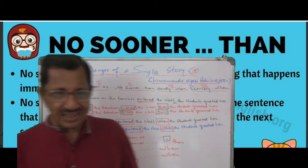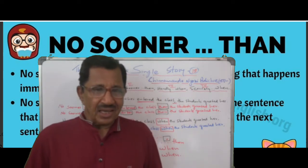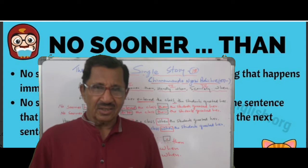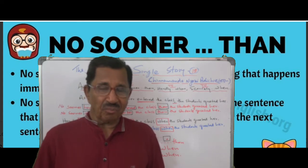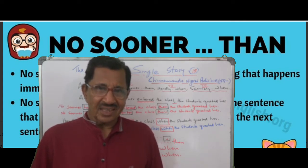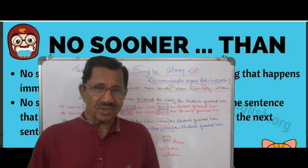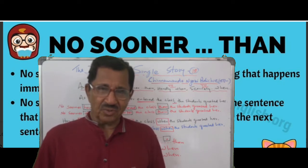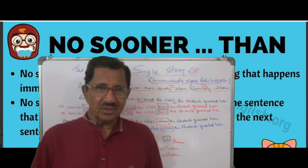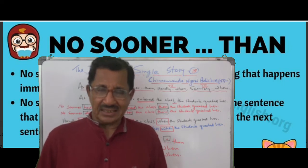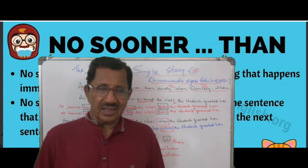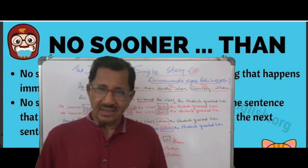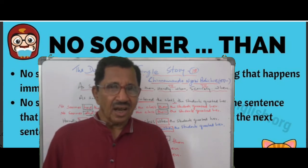Let's look at your textbook. You can see the exercise. The first sentence is: 'As soon as I reached the station, the train left.' You have four possibilities. First: 'no sooner' with past perfect — 'no sooner than.' Second: 'no sooner' with simple past — 'did... than.' Third: 'scarcely... when.' Fourth: 'hardly... when.'